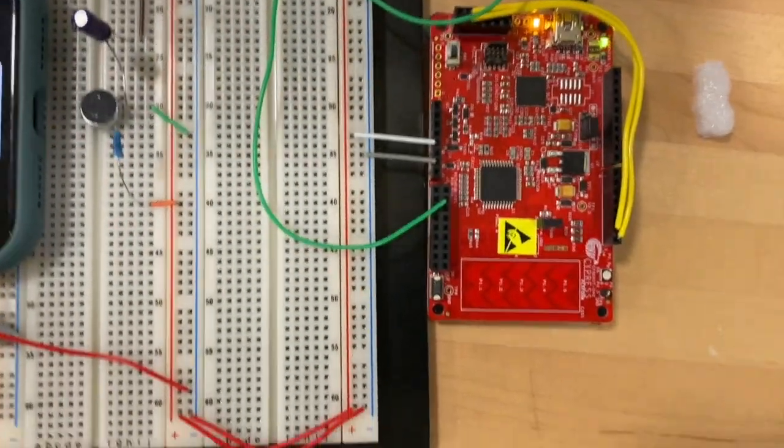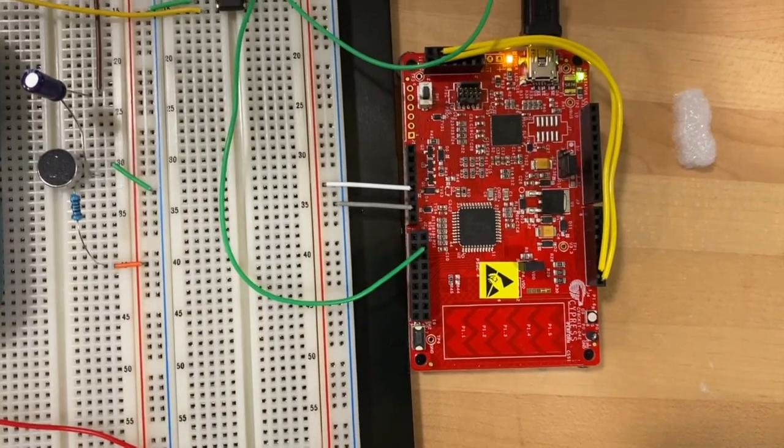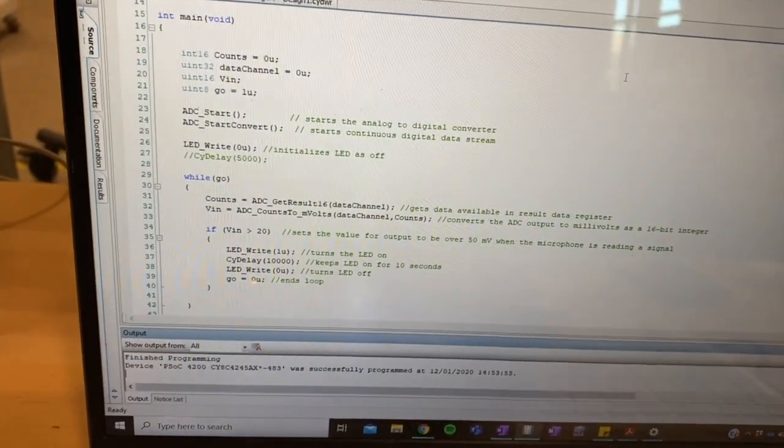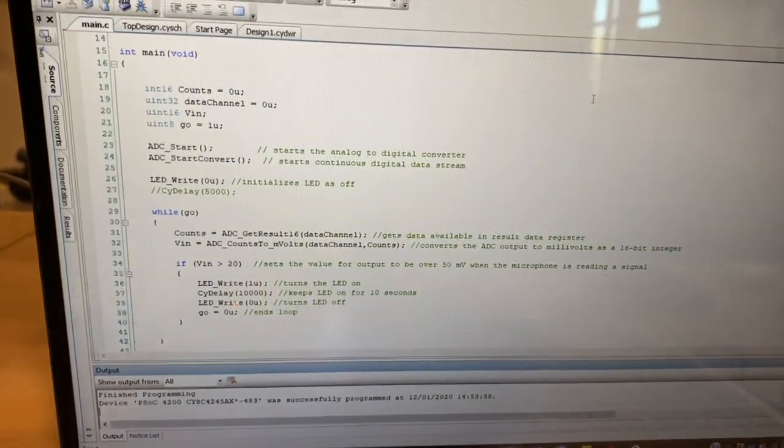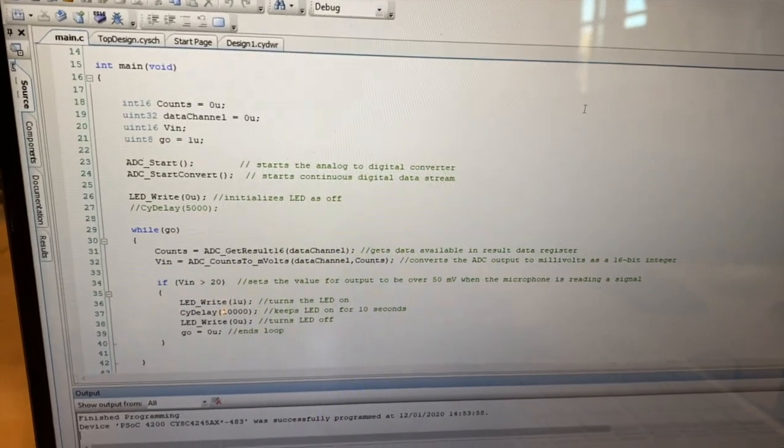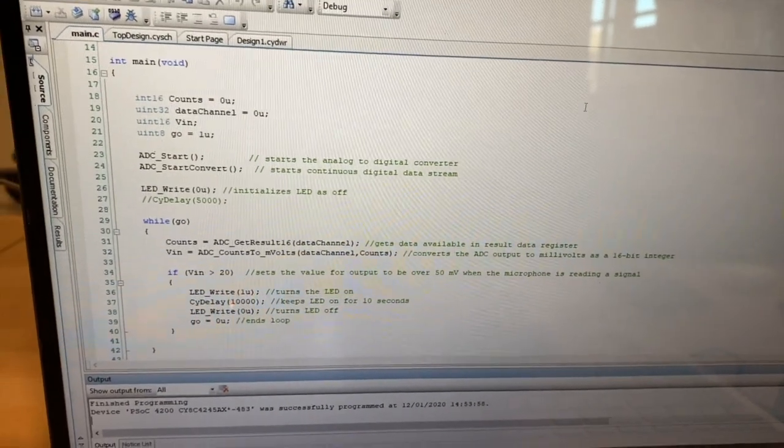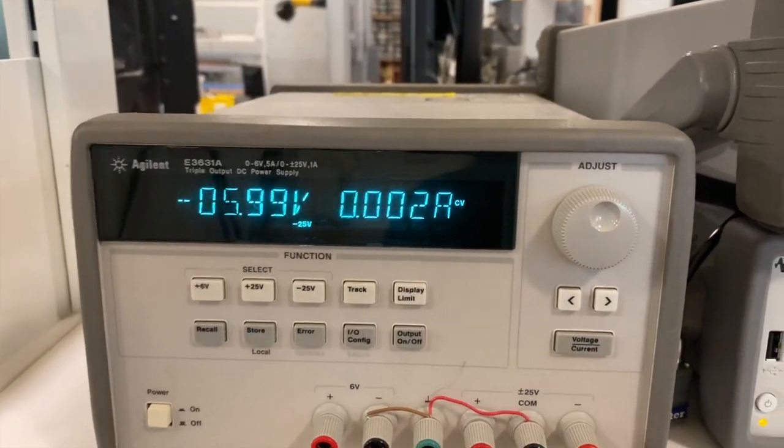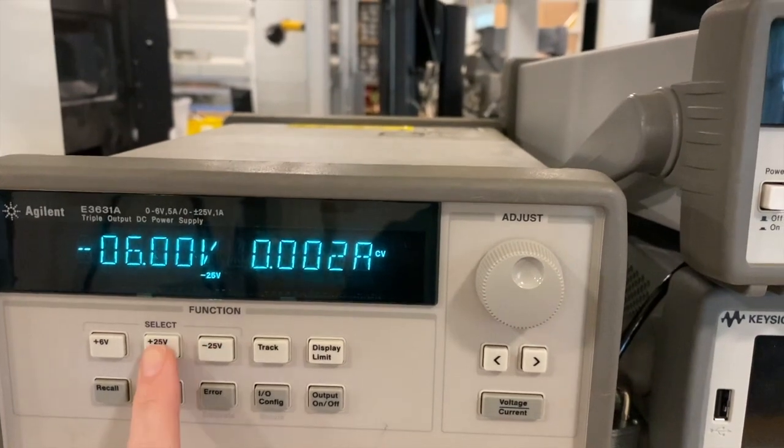And then as you can see right here the LED is off. In our code we have it so that it will turn on when it sees that the input of the voltage peaks. So here we have the negative VCC set at 6. Positive VCC is also set at 6. Here we're currently measuring it to be 32 millivolts at the output.